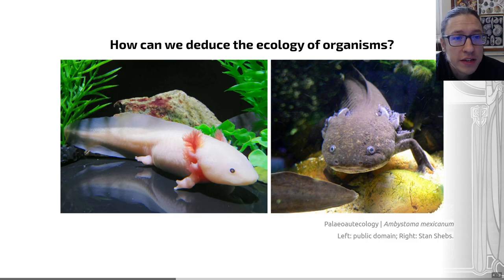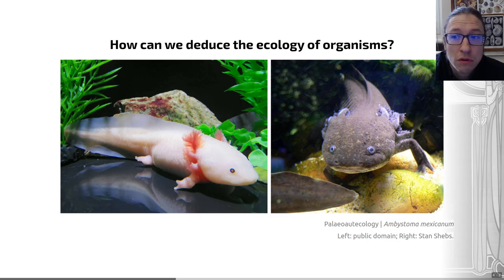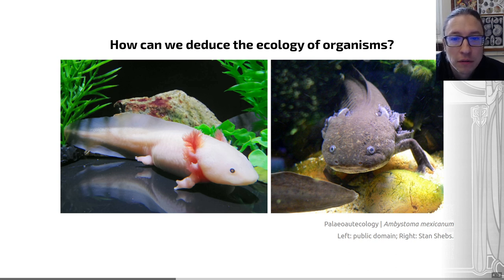We do this primarily through a thing that we can call functional morphology — that is, deducing the function of part of an animal from its morphology, from its anatomy, from its external appearance. So what we're trying to do is understand how morphological form in these animals is related to their function.